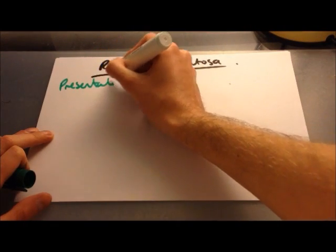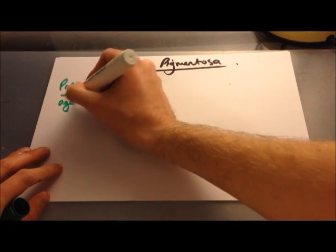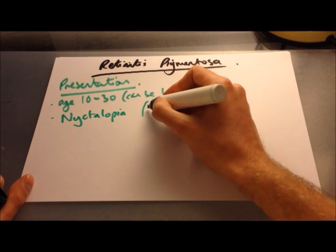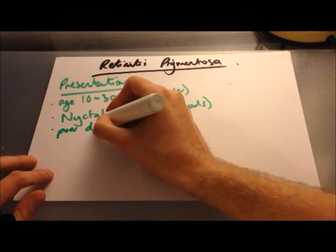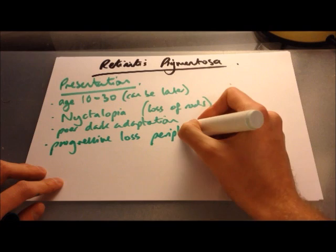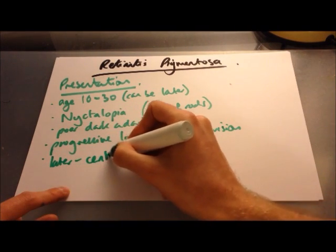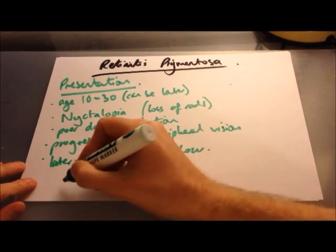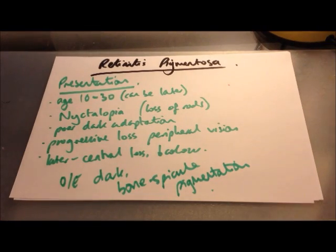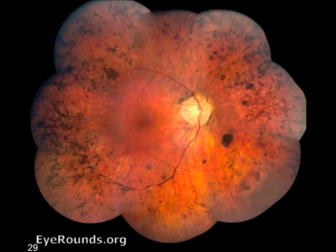Retinitis pigmentosa usually starts in childhood, with symptoms typically apparent by age 10–30, though this can be later depending on the genetic abnormality. Patients present with nyctalopia (impaired night vision) and poor dark adaptation, followed by progressive loss of peripheral vision — patients may report tripping over things they can't see in their peripheral field. Later in the disease, central vision and colour vision can also be lost. On fundoscopy, dark bone spicule pigmentation is visible around the periphery — patchy, spiky dark areas where retinal pigment epithelium has budded off and settled in the neural retina.